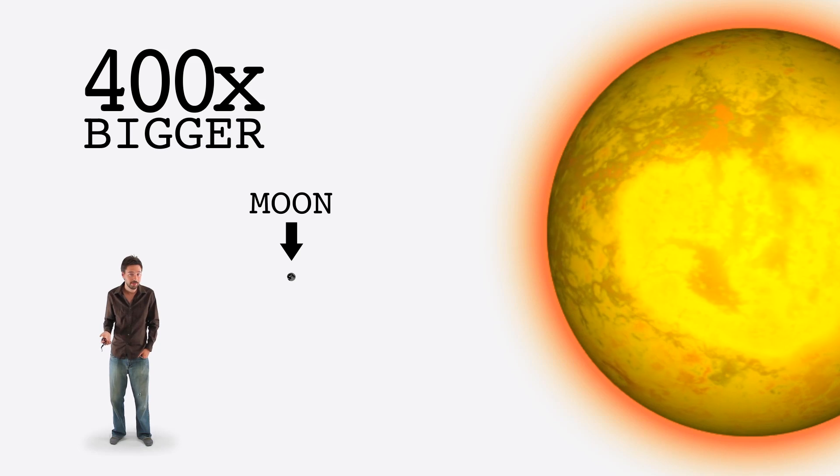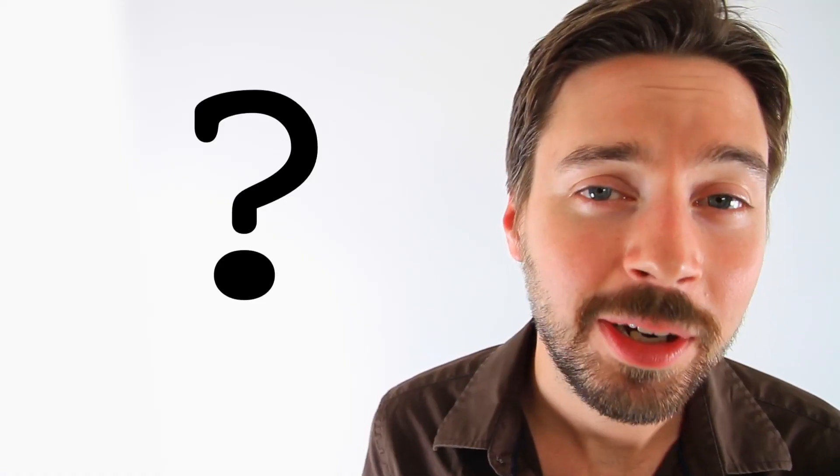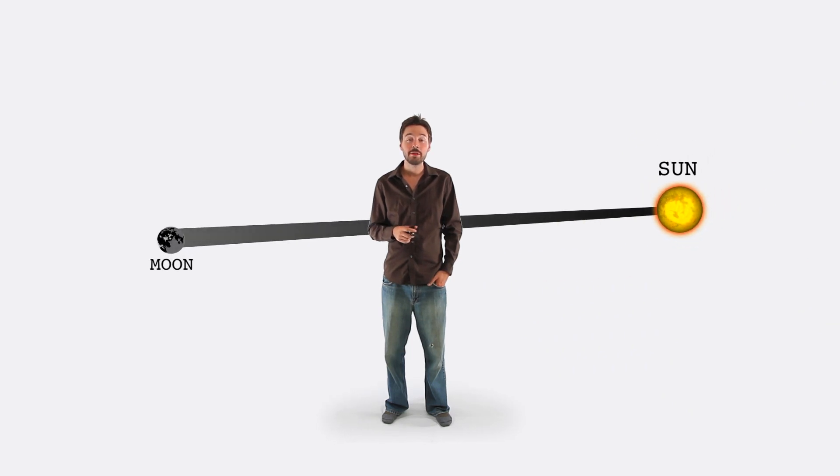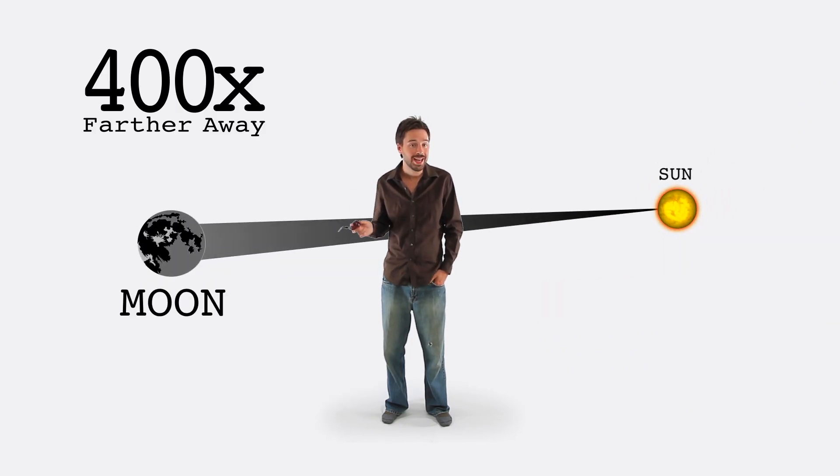Actually, the Sun is about 400 times bigger than the Moon. How can it appear to be the same size? The amazing thing is, the Sun is also 400 times farther away than the Moon.